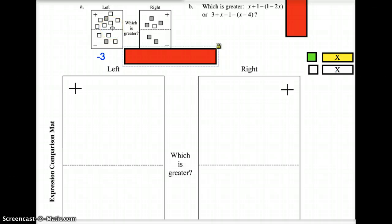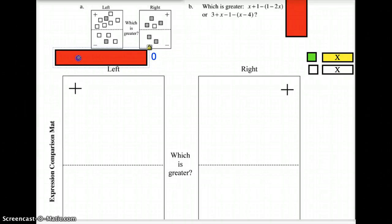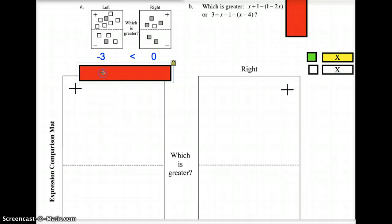This one simplifies to negative 3. If you don't believe me, do it. This side here, these two cancel here, and then these two cancel, and these two cancel, leaving you with a grand result on that side of 0. If we compare which is greater, well, we see that 0 is actually greater than negative 3.